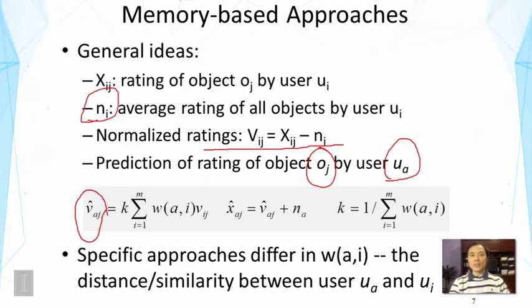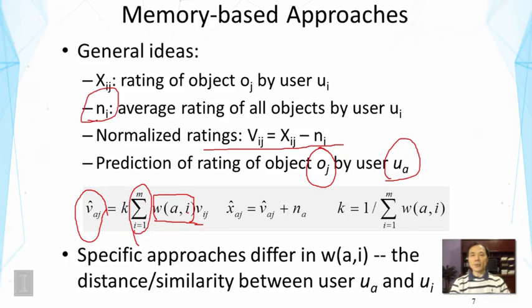Mathematically, the predicted rating of user a on object o_j is a combination of the normalized ratings of different users. We take a sum over all users, but not all users contribute equally — this is controlled by weights. The weight controls the influence of each user on the prediction, and naturally this weight should be related to the similarity between u_a and user u_i. The more similar they are, the more contribution u_i should make.